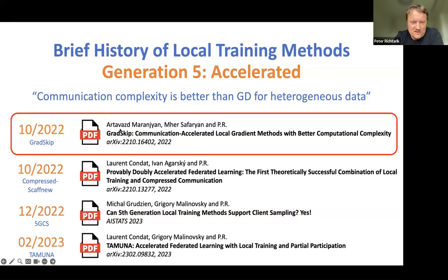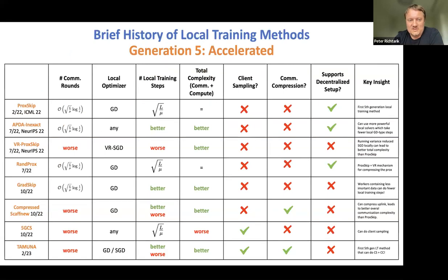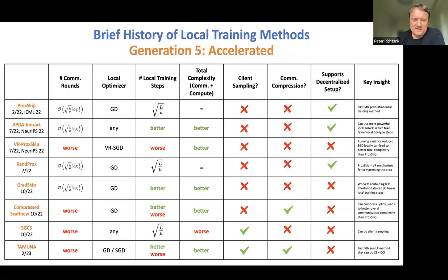Previously, K (the number of local training steps) was just a hyperparameter, and theory always predicted either K=1 is best or that any K gives the same result as K=1. With generation five analysis, we can now predict the optimal K. You take √(L/μ) local training steps per round, communicate every √(L/μ) steps, so you have √(L/μ) communication rounds and √(L/μ) local steps per round — multiply them to get L/μ total gradient steps. This is how the acceleration works.